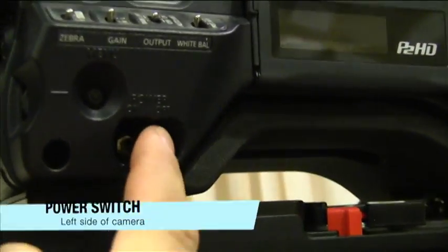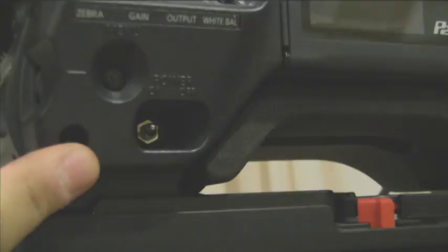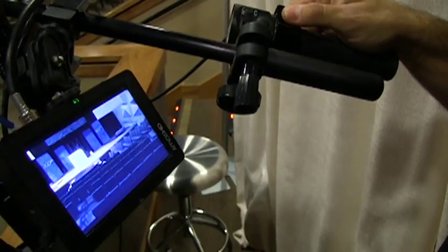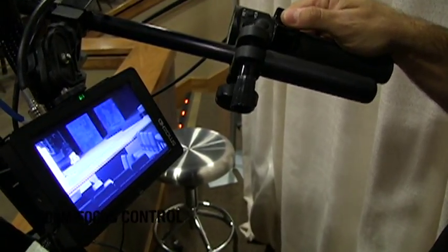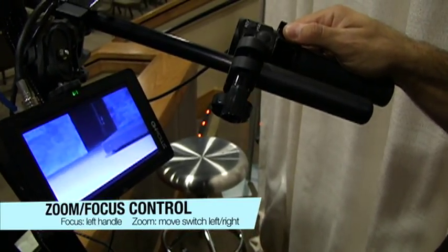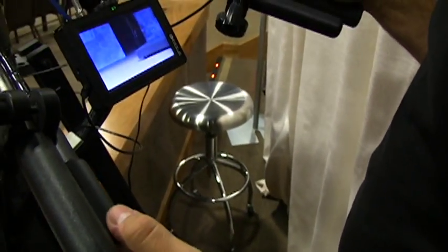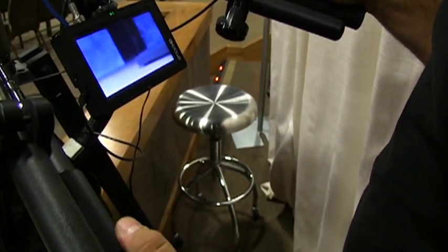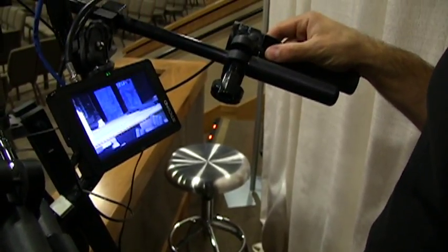To power up the camera, merely flip the switch on the left side of the camera. Your zoom control is on the right pan handle. Move it to the right to zoom in. Focus by adjusting the knob on the left pan handle. Zoom out by moving the zoom control to the left.